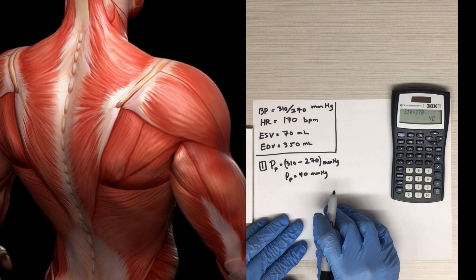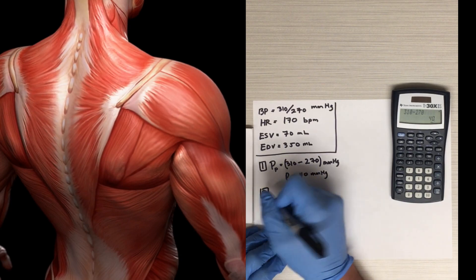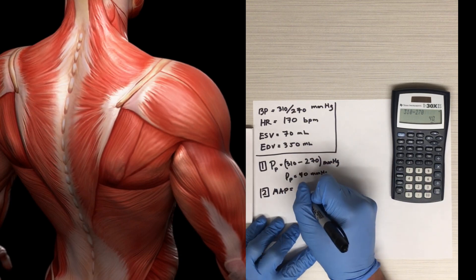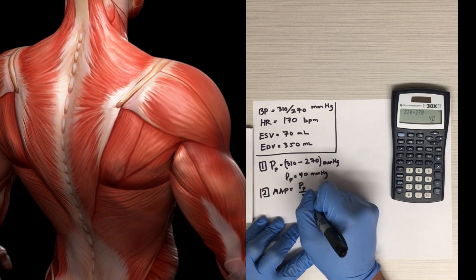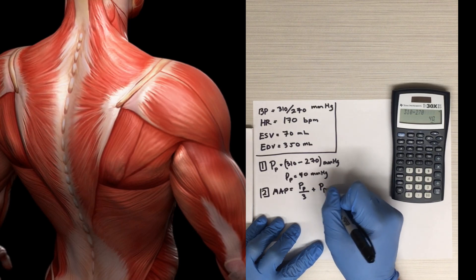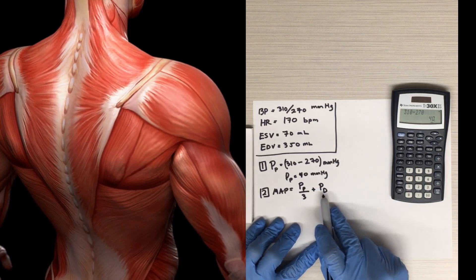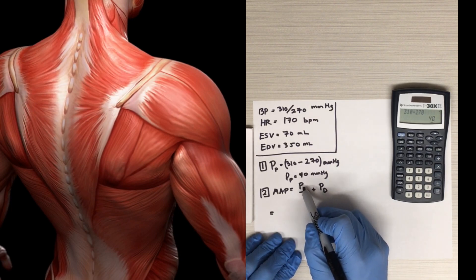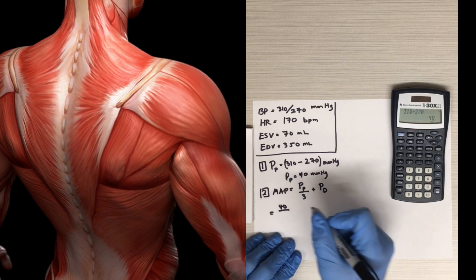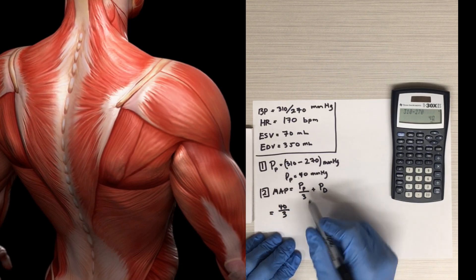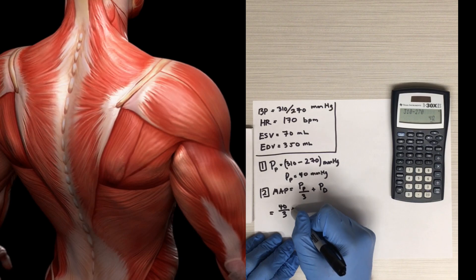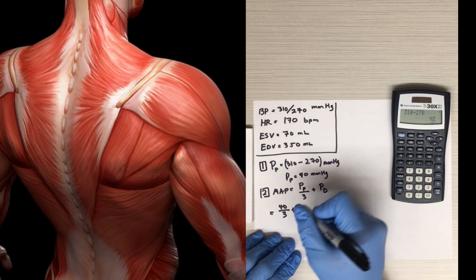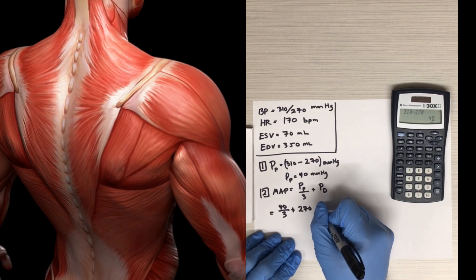The second thing we're asked to calculate is the mean arterial pressure. Recall that mean arterial pressure equals the pulse pressure divided by 3, plus the diastolic pressure. We have all these values now. So the mean arterial pressure would be the pulse pressure — 40 millimeters of mercury — divided by 3, plus the diastolic pressure, which was given as 270 millimeters of mercury.